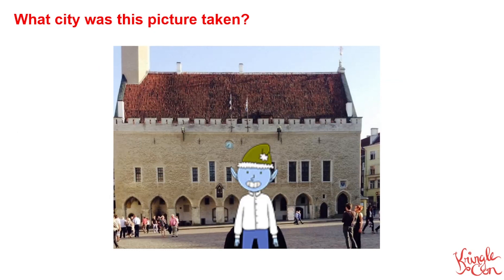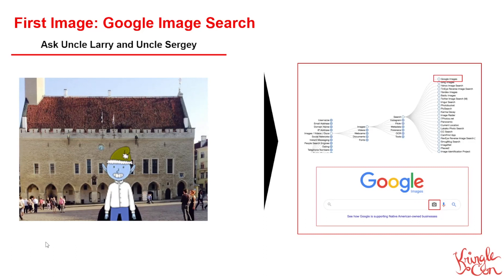Let's focus back on this first picture. There's some type of building, kind of looks European in nature. We've got our elf standing there with some folks in the background. It definitely looks like a high visibility tourist location. Since it looks like a recognizable landmark, we're going to ask Uncle Larry and Uncle Sergei — going back to our OSINT Framework website, we can go through the images, video, docs category, go to images, look at search, and you'll see there's a quick search to Google Images. Inside Google Images, where the camera icon is, if you click that, it'll allow you to either provide a URL or upload an image, which will then search across the internet and try to match like pictures to that.